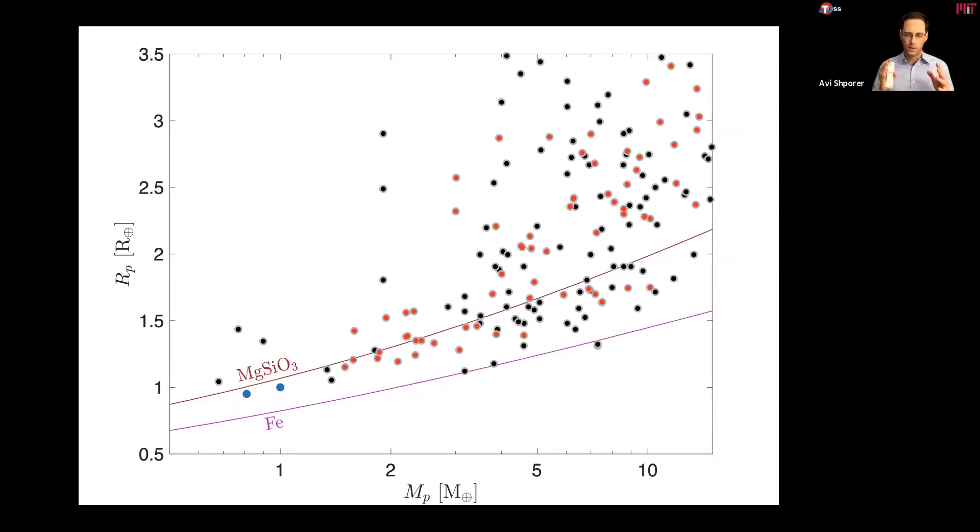Now, TESS was designed to look for planets and it is placing planets on this diagram where through their position in this two-dimensional radius mass parameter space, we can estimate their composition. Since the stars are bright, we can also go and study the planet atmosphere. And through all of that, we can infer or conclude about the likely scenarios for planet formation.